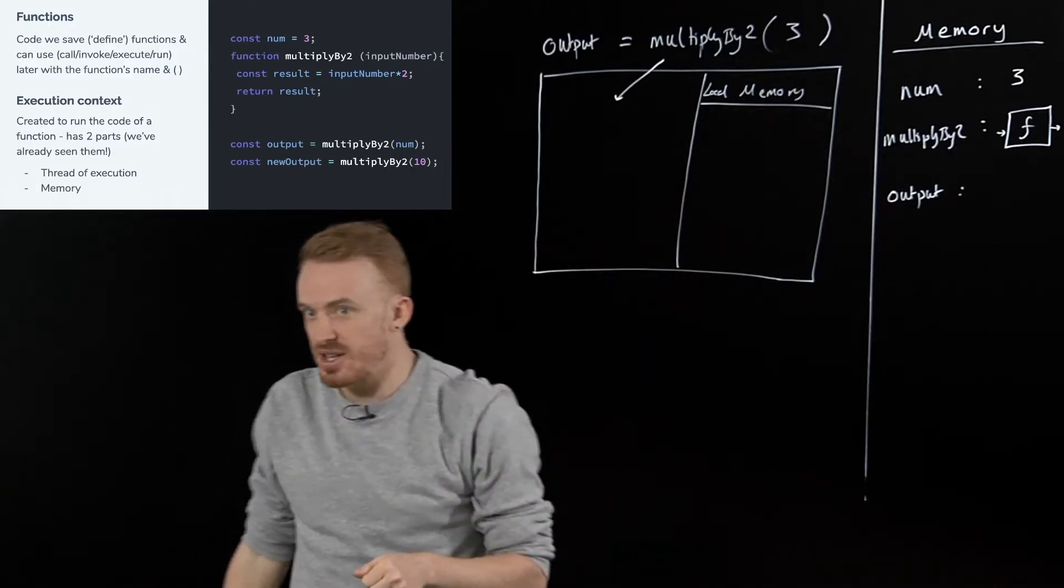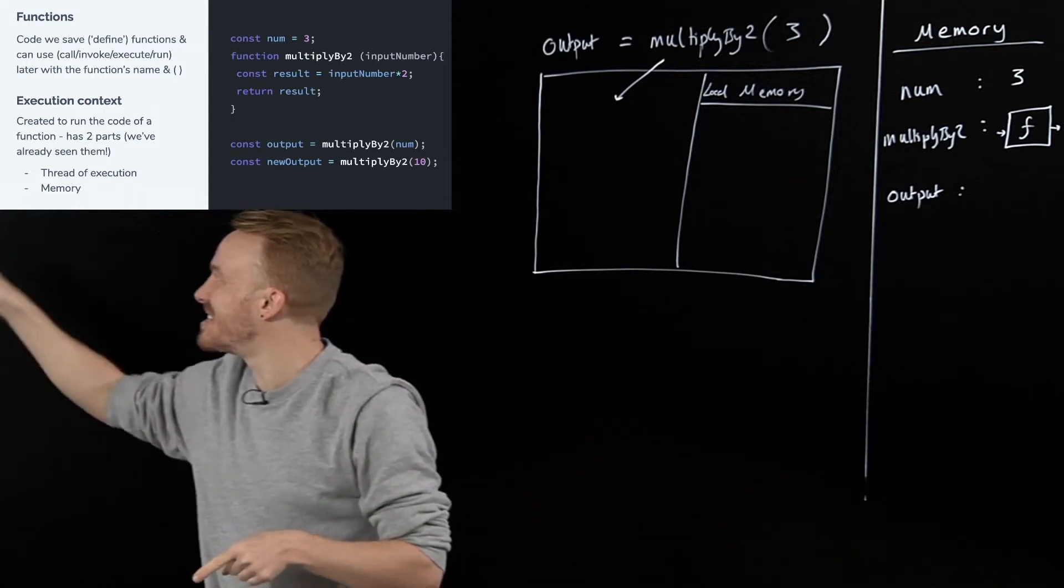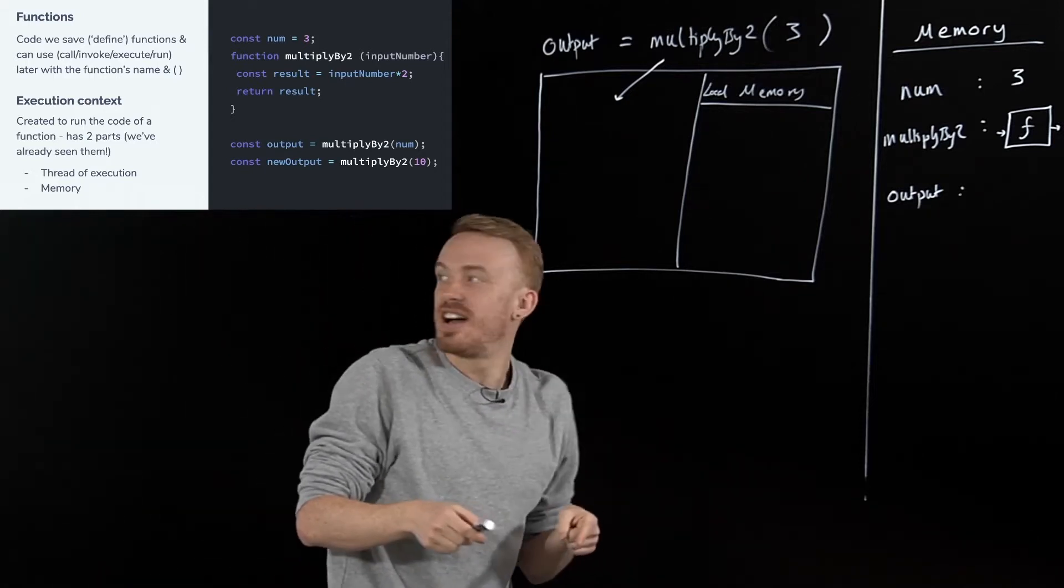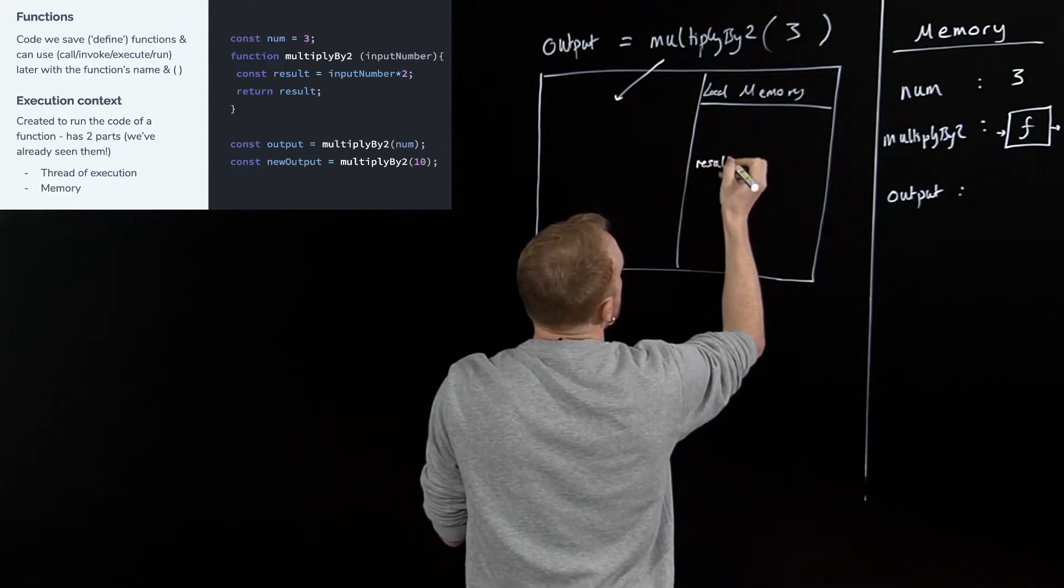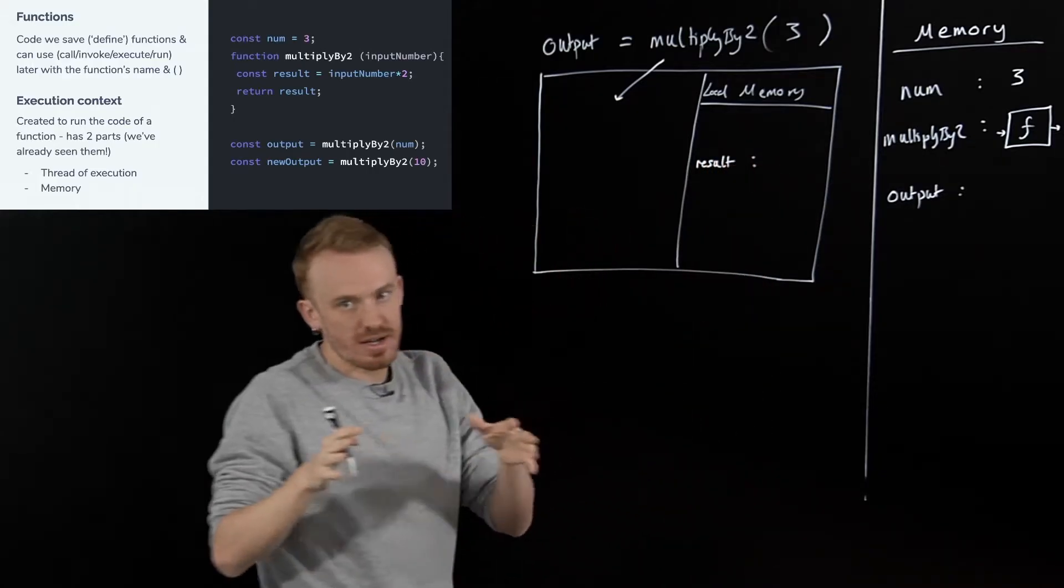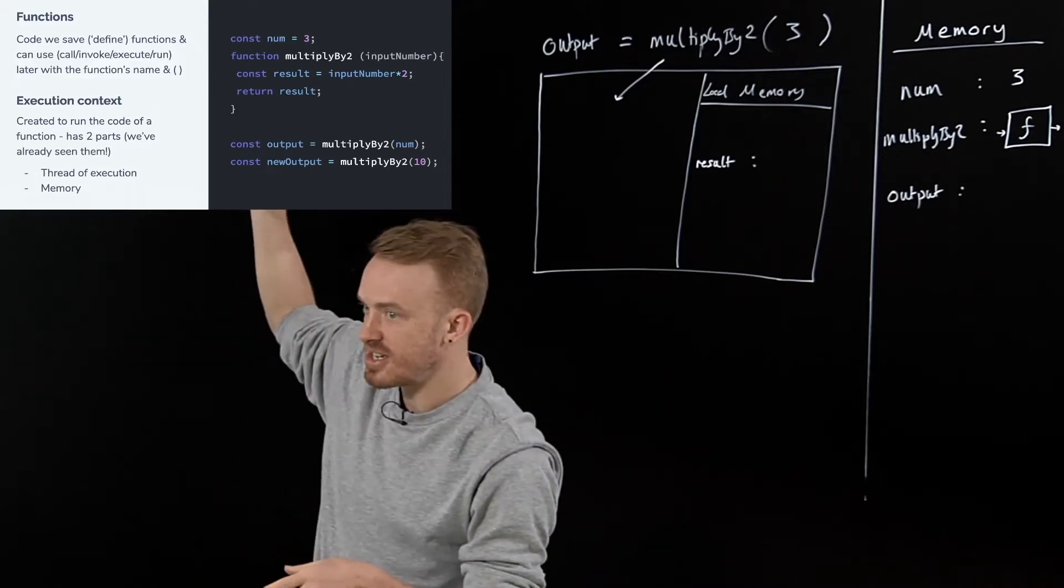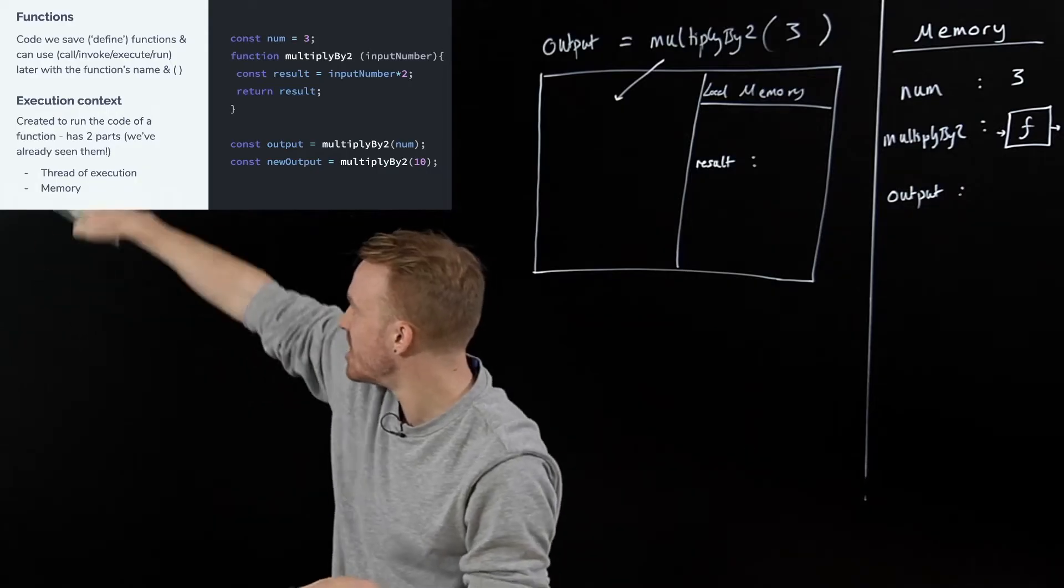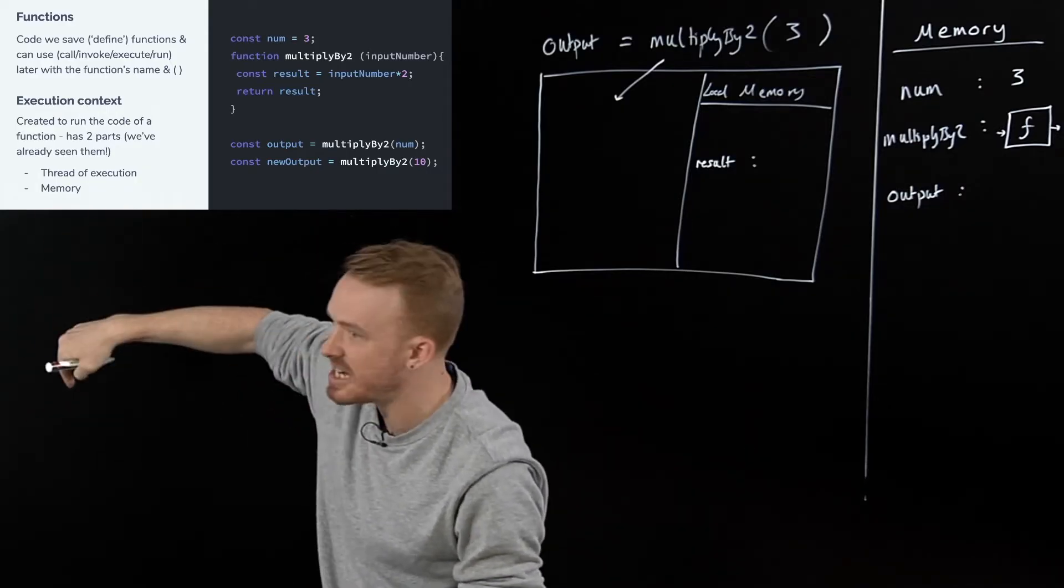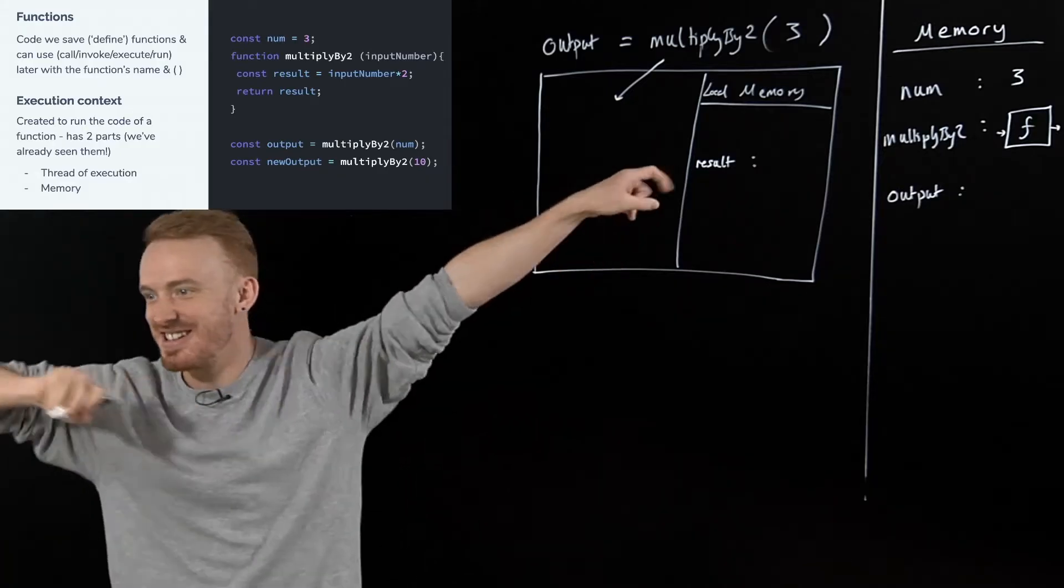So into this function we go. And what is the first thing that we're going to do inside of here? Ethan, what is the first thing we're going to do inside? Declare the const result. Ethan's almost right. That's the second thing we're going to do. But Ethan, whenever we run code in a function, the first thing we always handle is what? Before we hit the body of the function, we've got some stuff we're inserting into the function that's going to show up inside the local memory. And that is? Input number.